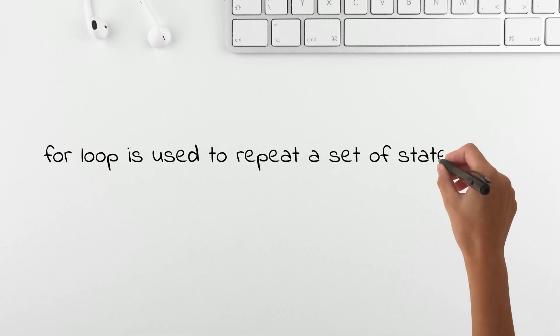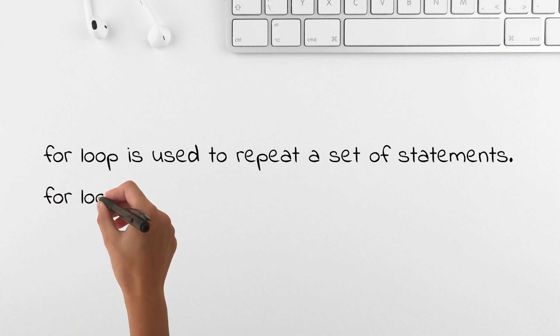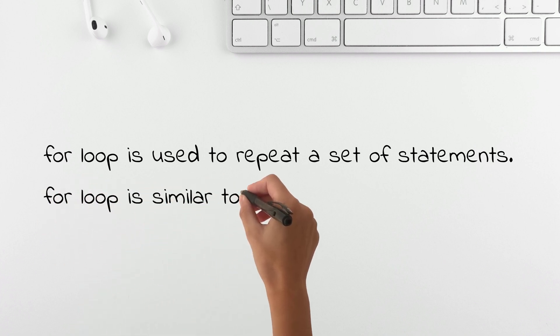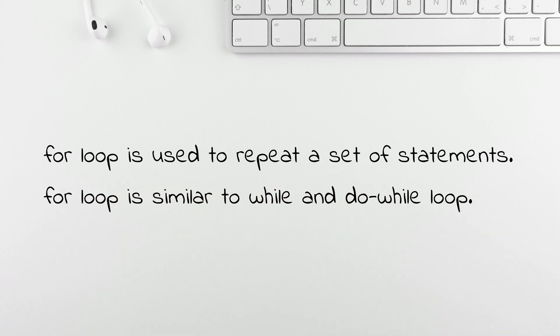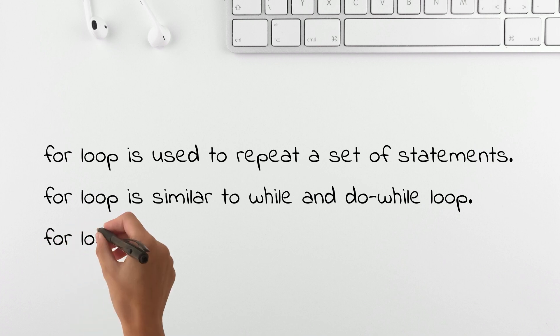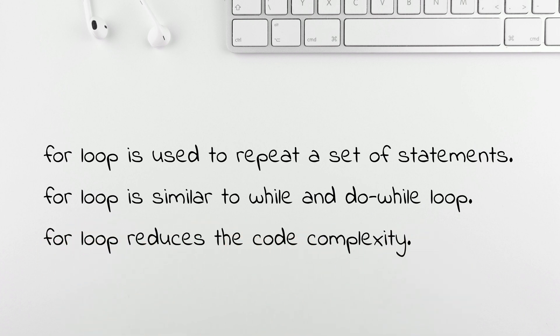The for loop is used to repeat a particular set of statements multiple times. This loop is similar to the while loop and do-while loop. However, the syntax of for loop is different and it reduces the complexity of the code. I will add the link in the description if you want to learn while and do-while loop.